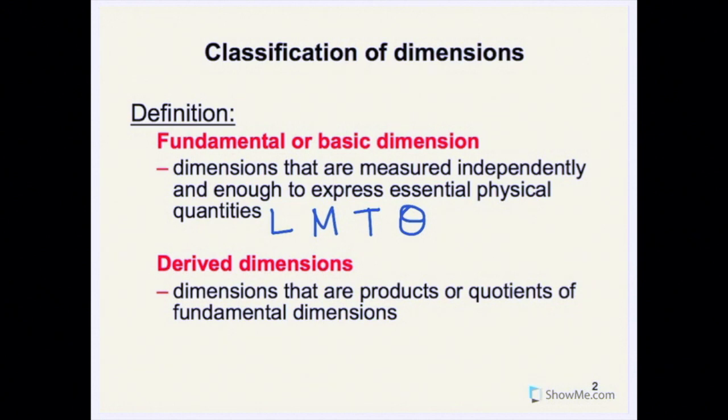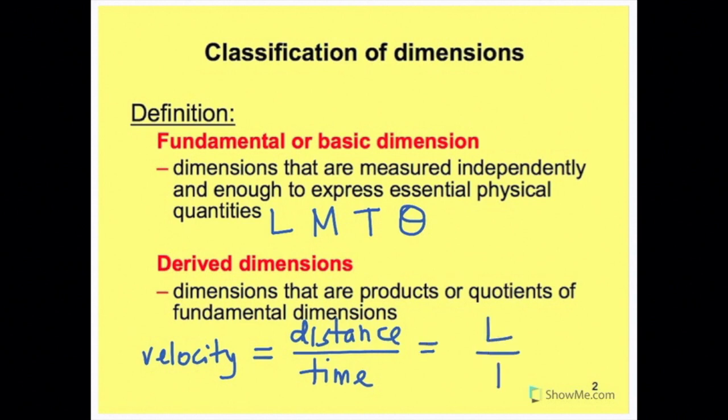As for the derived dimensions, it's a combination of or the products or quotients of fundamental dimensions. To explain more about the derived dimension, let me use a simple example: velocity. We all know that velocity is distance over time, so it is a quotient of length over time. It is a combination of the basic dimension L and T.